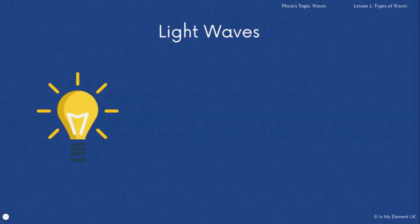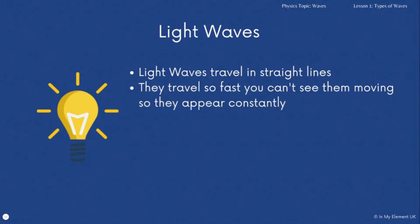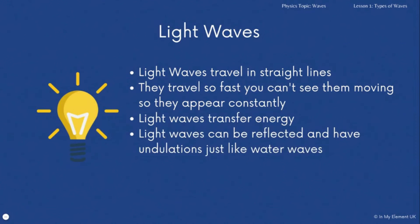Once you've got your head around water waves, what you need to have an understanding about is light waves. They travel in straight lines. What's worth remembering is they travel so fast you can't see them, so although it's a wave moving, it appears as if it's there all the time because the speed of light is so high.